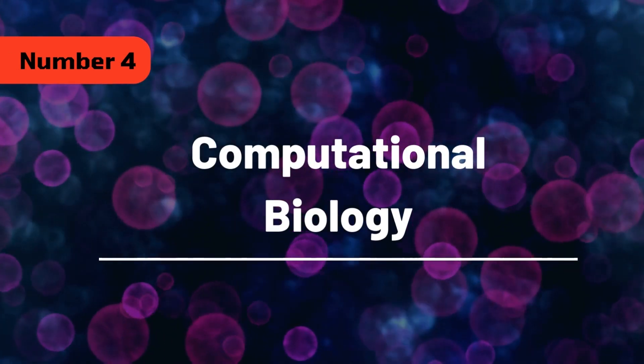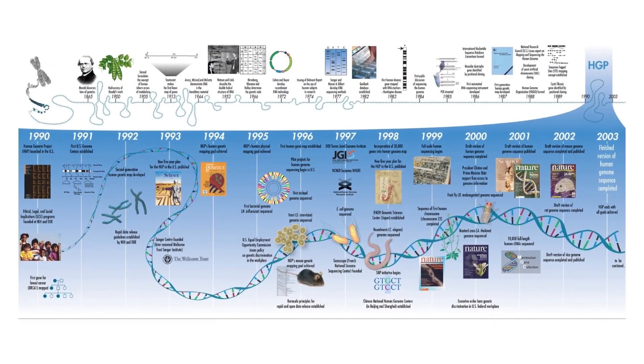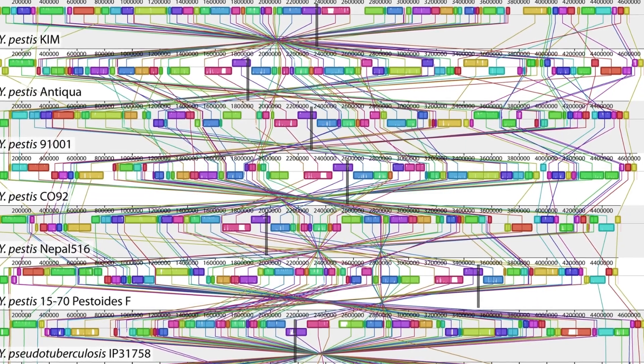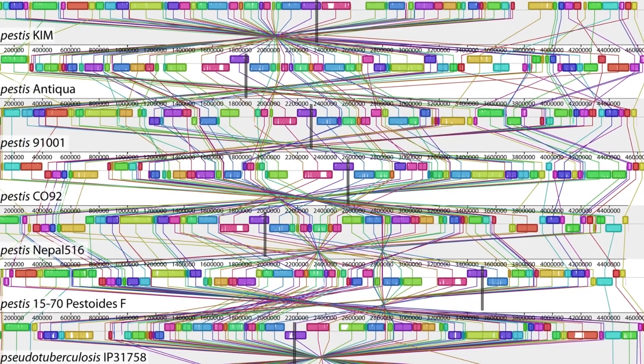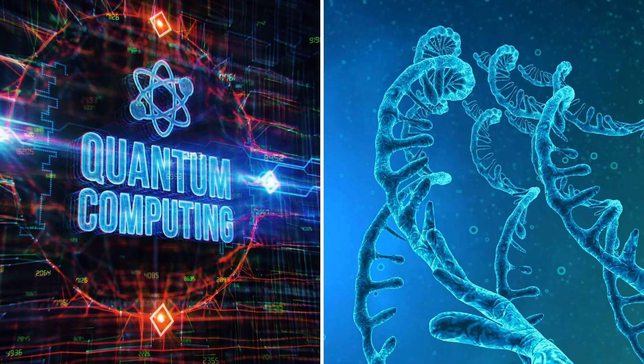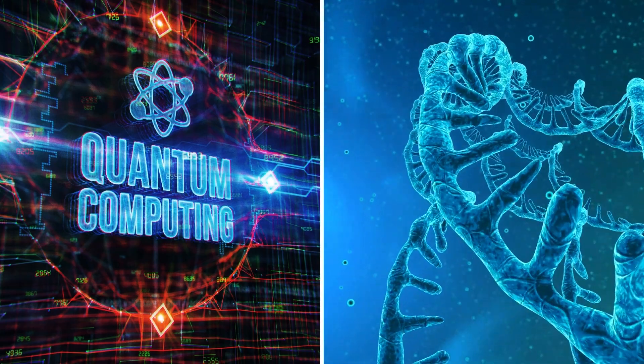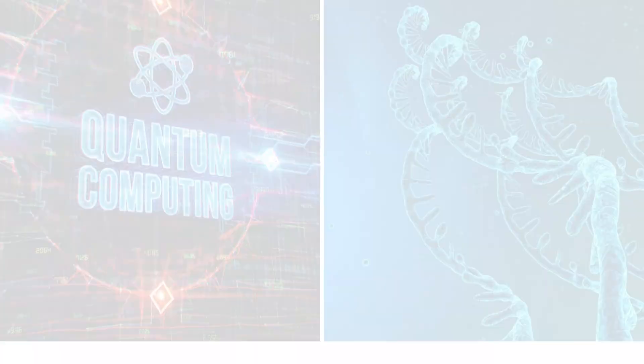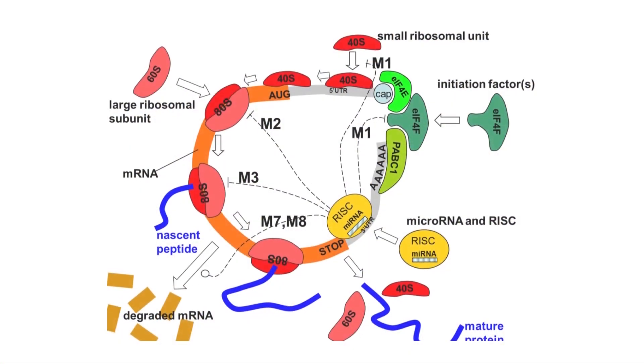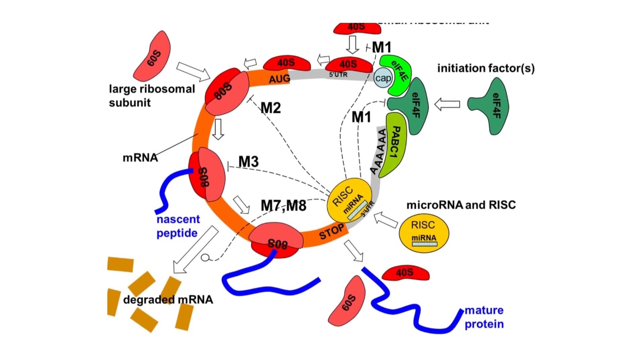Computational Biology. Quantum computing played a major role in solving problems in the field of computational biology. Computational Genomics is a well-known example of this. Quantum computing has also extremely minimized the time required to sequence the human genome. Quantum computing algorithms have also been used to investigate the function of microRNA.